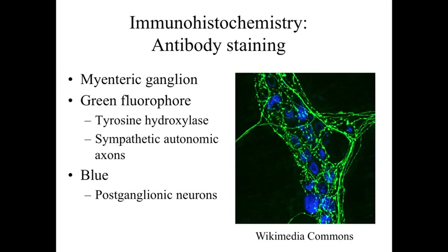An example of immunohistochemistry antibody staining: this is a myenteric ganglia, where green staining shows where tyrosine hydroxylase is present, helping identify a subset of axons within the body. Blue staining marks postganglionic neurons. We can learn much more specific information about the types of cells and what they're doing by using antibodies and immunohistochemistry.